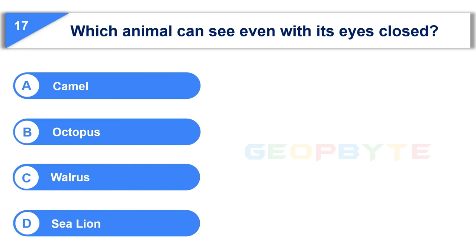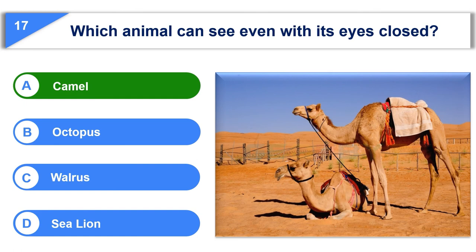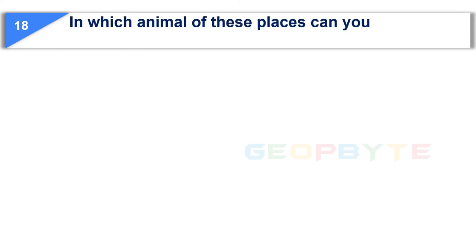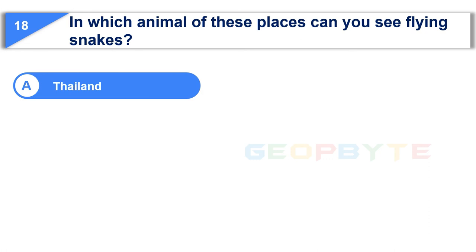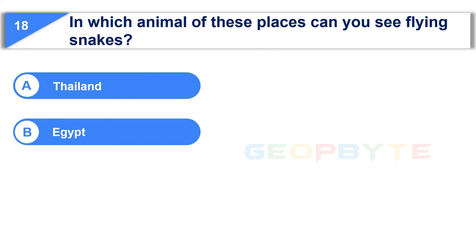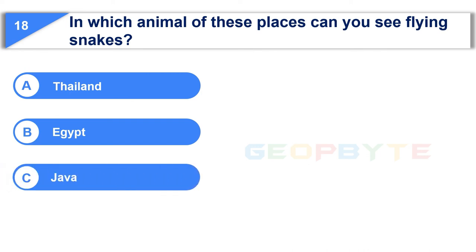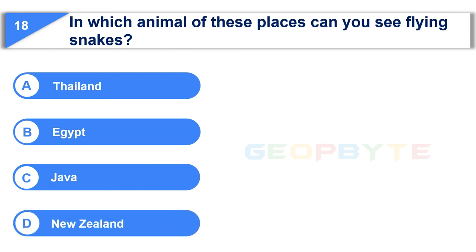Your time is up and the correct answer is Option A: Camel. The next question is: in which of these places can you see flying snakes? Option A: Thailand. Option B: Egypt. Option C: Java. Option D: New Zealand. Your time starts now.